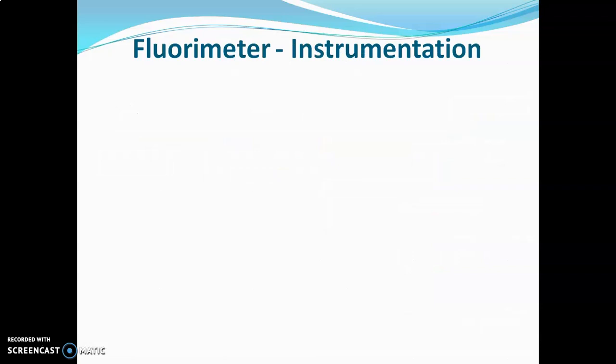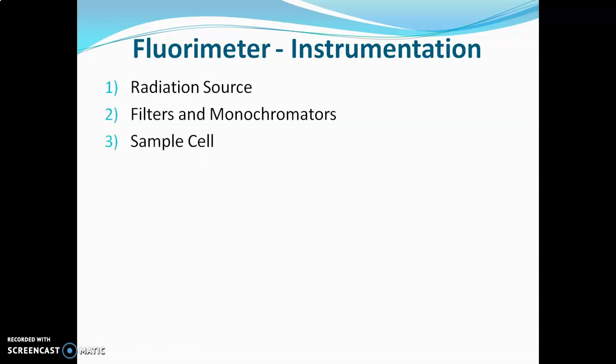Now we will see the instrumentation in detail. The main parts of the instrument are: radiation source, filters and monochromators, sample cell, and detectors.